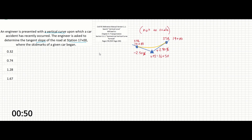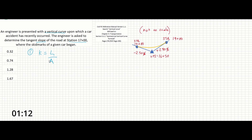The first thing we need to solve for is the rate of change along the vertical curve. That term — the rate of vertical curvature, otherwise known as the rate of change of grade — is given as K equals L over A. K is the rate of vertical change, L is the length of the curve, the distance between the two stations, and A is the algebraic difference in grades.